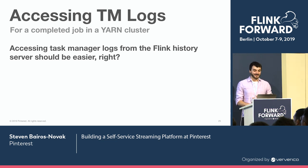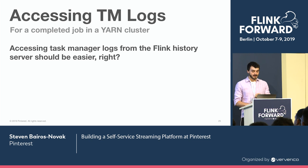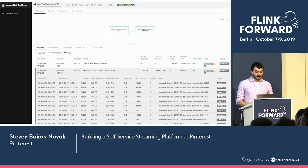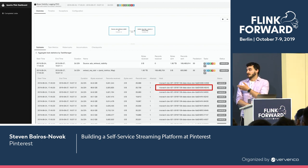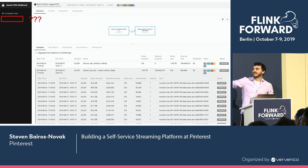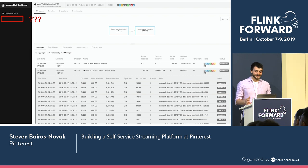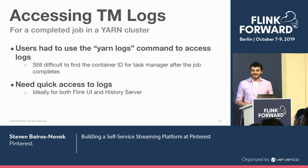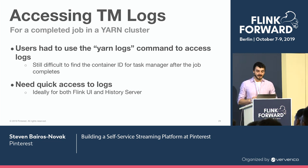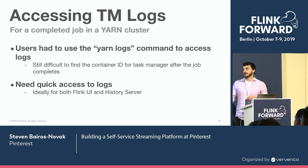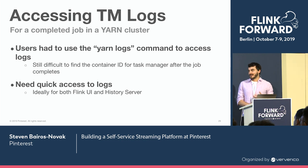The more challenging problem was: what happens after the fact, once the job has already crashed and you want to see the crashed task manager's logs? In the Flink history server UI, there isn't even a task manager page — so there's literally no way to access task manager logs from the Flink history server UI. Users were technically able to use the yarn logs command from a Yarn host, but it was really difficult to find the container ID of the task manager once the job is finished.